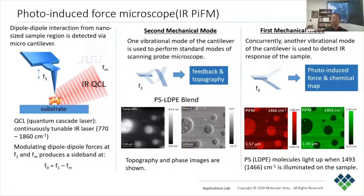This is shown in the middle panel. The sample is then excited by a tunable laser to vibrate the first mode, F0, via photo-induced force, as shown in the left panel. The laser is modulated at frequency FM, where FM is the difference between the second and first resonant frequencies.